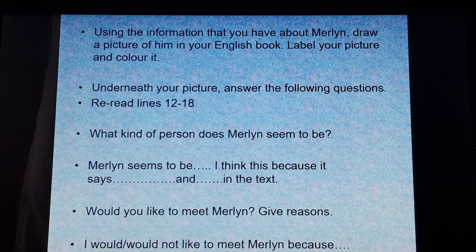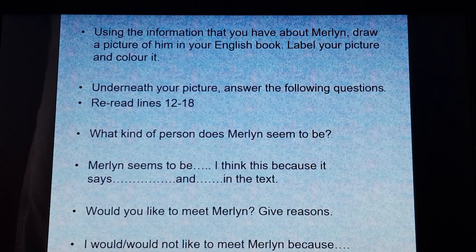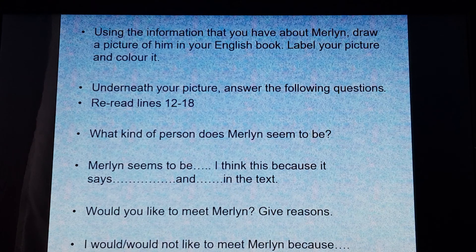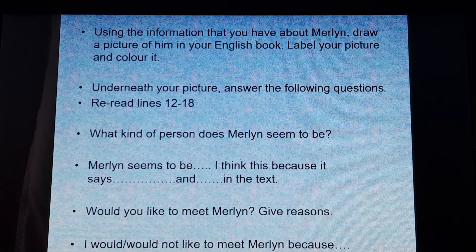Underneath your picture, answer the following questions. You'll need to reread lines 12 to 18 first. Then: what kind of person does Merlin seem to be? We're thinking about using evidence from the text, so write: 'Merlin seems to be [something]. I think this because it says [something] in the text.' The second question: would you like to meet Merlin, and give a reason — 'I would / would not like to meet Merlin because...' — basing your answer on what we've read. The picture will probably take you about 15 minutes.